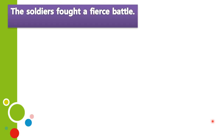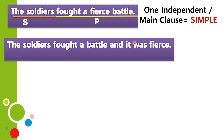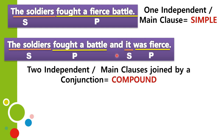Now we can proceed to start our transformations. Look at this sentence: 'The soldiers fought a fierce battle.' There is one subject; 'fought a fierce battle' is the predicate — one independent main clause, so it is a simple sentence. Now: 'The soldiers fought a battle and it was fierce.' Here you can see two subjects, two predicates — two main clauses joined by the coordinating conjunction 'and.' So this is a compound sentence.